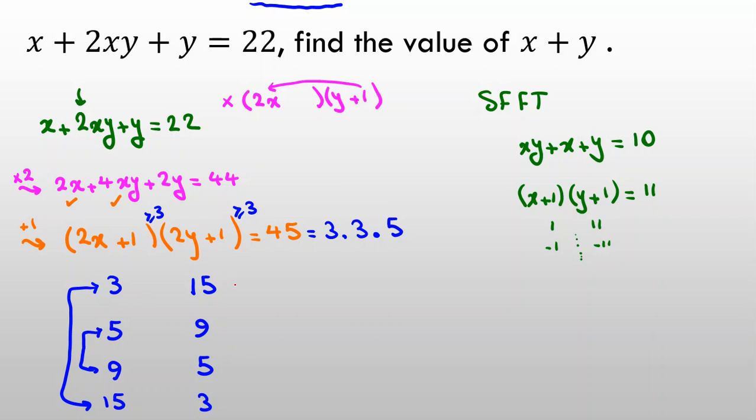Let's check the first case. 2x plus 1 equal to 3, 2y plus 1 equal to 15. So, if we subtract by 1, 2x equal to 2. 2y again subtract by 1, 14. If we divide by 2, the first one, x will be 1, and the second one, y will be 7. So, it is our first answer.